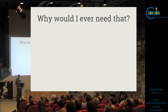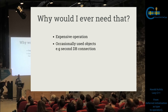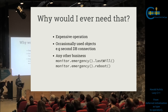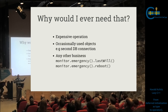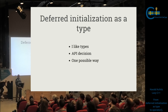Why do you ever need this? One reason: if you have something that takes a lot of time but you don't need it always. Another reason could be occasionally-used resources like a database connection — you want to have the connection in the class but don't want to always initialize it. Or a scenario like an emergency monitor where instantiating it cuts all traffic. I like to model such things as types — it's an API decision.